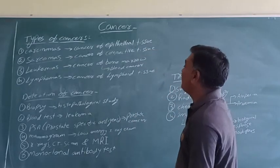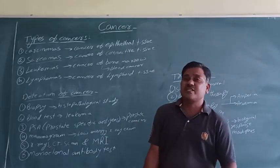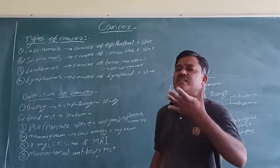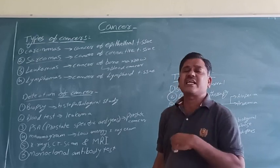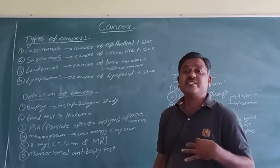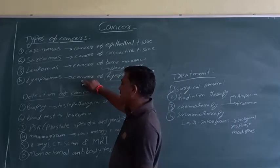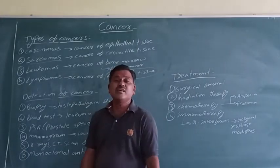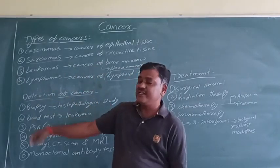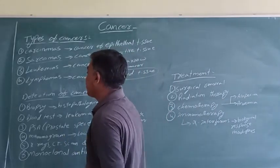The last type is lymphomas — cancer of lymphoid tissue. We have studied about lymphoid organs: primary lymphoid organs and secondary lymphoid organs. If cancer occurs in Peyer's patches, in tonsils, in bone marrow, or in thymus — all these are lymphoid tissues and organs. If there is occurrence of cancer in lymphoid tissues, it is called lymphomas. So, carcinoma, sarcoma, leukemia, and lymphoma are the different types of cancers depending on which type of tissue is affected.